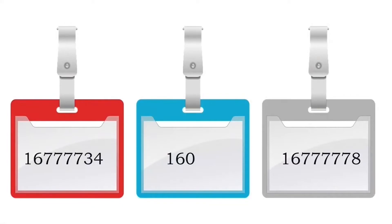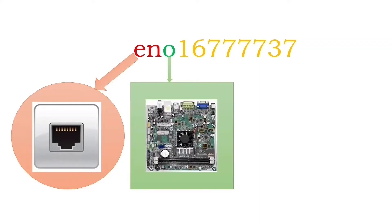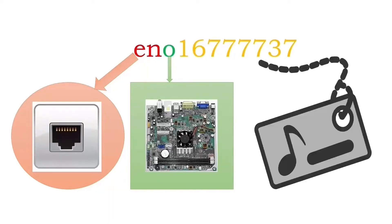Let's take an example name: ENO-16777737. In this name, the first two letters EN stand for an Ethernet interface. The next letter O stands for an onboard interface. The remaining number 16777737 is a unique ID number.